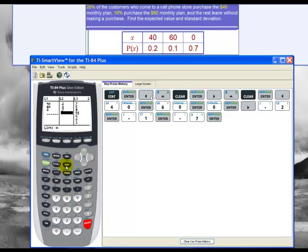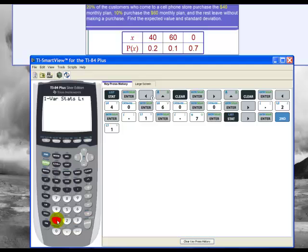So now I go to STAT and then CALC, one variable STATS. Then I'm going to type in second L1 - that's second one to get to L1. And then comma, comma is right here under the sign, and then second L2 which is second 2. Then I hit enter.